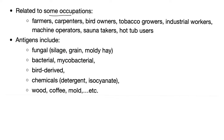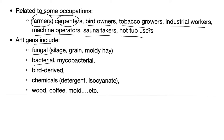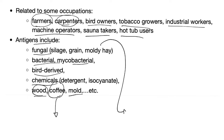This disease is related to certain occupations: farmers, carpenters, bird owners, tobacco growers, industrial workers, machine operators, sauna takers, and hot tub users. Antigens can be fungal, bacterial, mycobacterial, bird-derived, chemicals, wood, coffee, mold, etc. Moldy hay is extremely important when you talk about farmer's lung, a subtype of hypersensitivity pneumonitis.